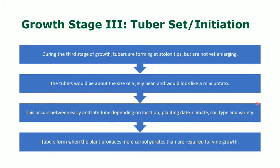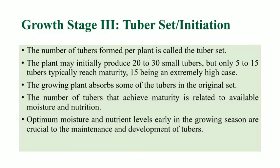Tubers form when the plants produce more carbohydrates than required for vine growth. The number of tubers formed per plant is called the tuber set. A plant may initially produce 20 to 30 small tubers, but only 5 to 15 tubers typically reach maturity — 15 being an extremely high case.